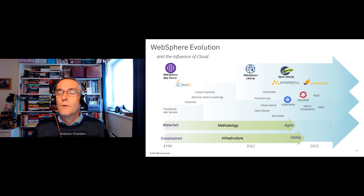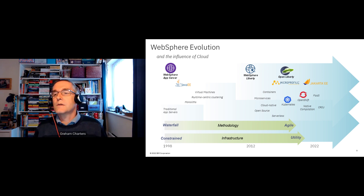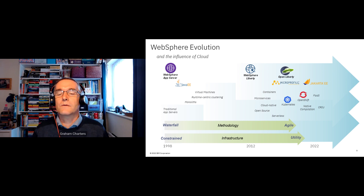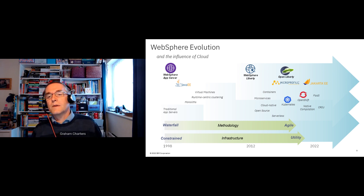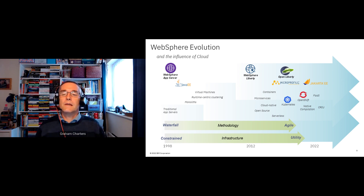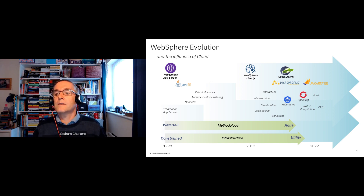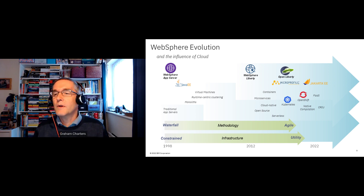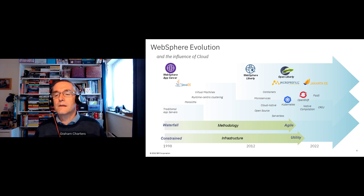Beyond WebSphere Liberty, we have many customers interested in open source who want to start with open source and then get support for it. So we open-sourced WebSphere Liberty as Open Liberty. Open Liberty is the upstream open source for WebSphere Liberty — they are binary identical where the components are the same — and customers can deploy Open Liberty in production and get support through WebSphere licenses.